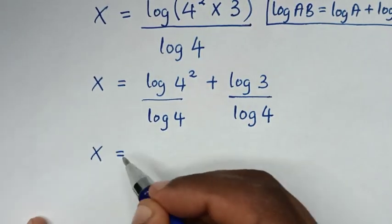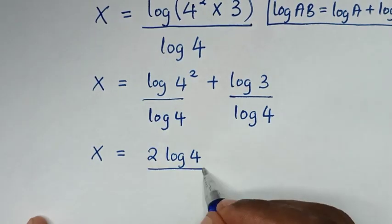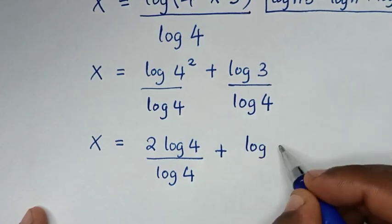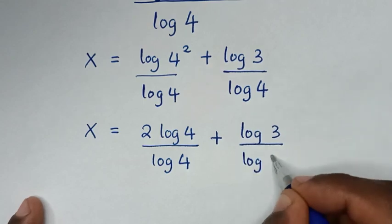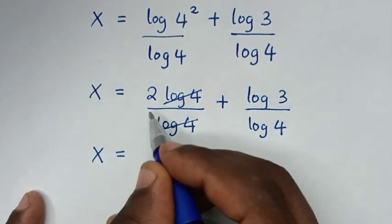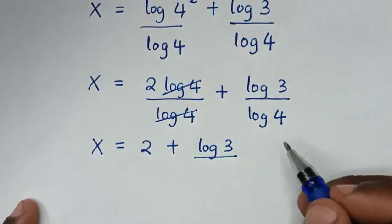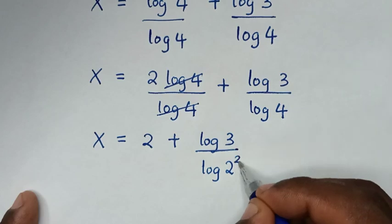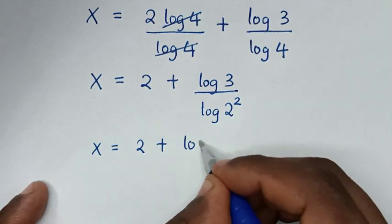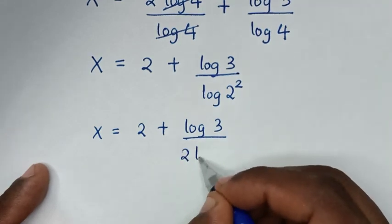Then, it will be x is equal to log of 4 squared over log of 4, plus log of 3 over log of 4. The power 2 will move to the base, so it becomes 2 log of 4 over log of 4. Log of 4 cancels log of 4, giving x equal to 2 plus log of 3 over log of 4. Now, log of 4 is the same as log of 2 squared, so the power 2 moves to give 2 times log of 2.